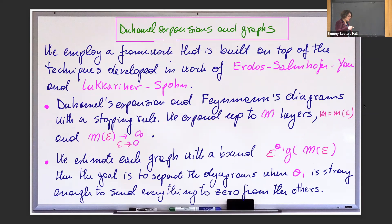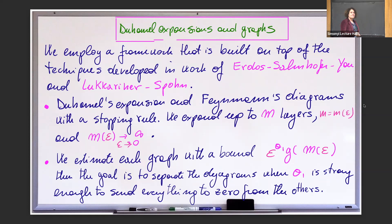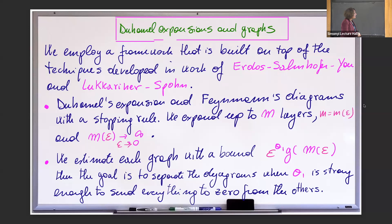Instead, when you have to do the whole analysis, you give yourself a certain number M at which level you stop. That M, as epsilon goes to zero, goes to infinity — like log epsilon actually, exactly. So it's going to be a remainder that you have to control, which is really complicated. You have to separate your graphs from the ones that will give you the equation, and then the remaining ones get estimates of type epsilon to some theta times some function of M-epsilon. There's a competition between these two, and you have to make sure that for the pieces not present in the equation, they go to zero.